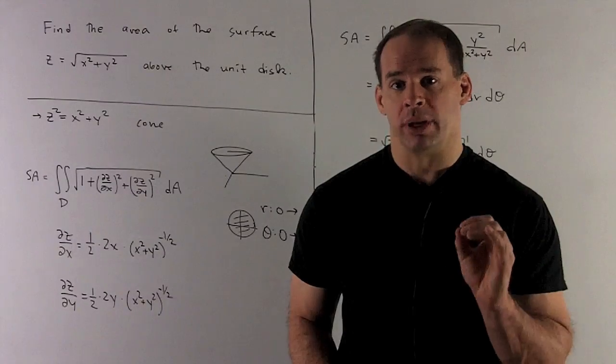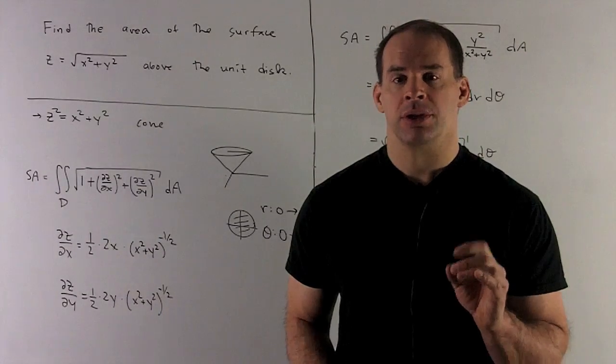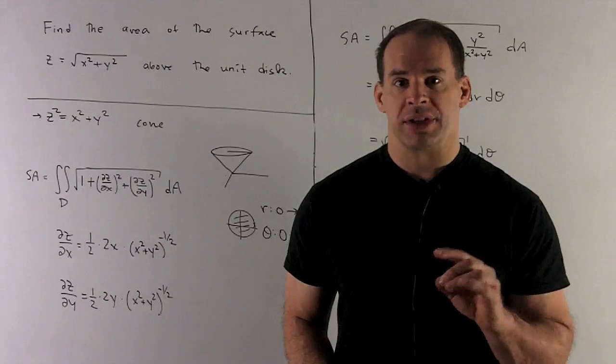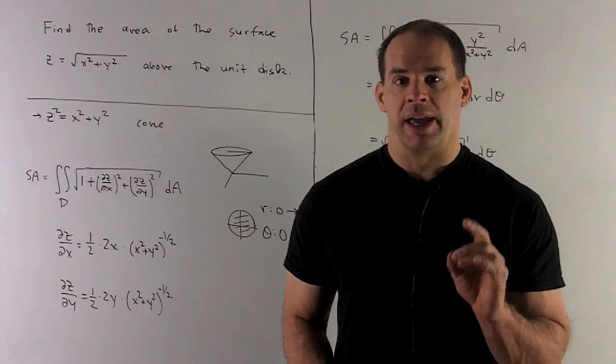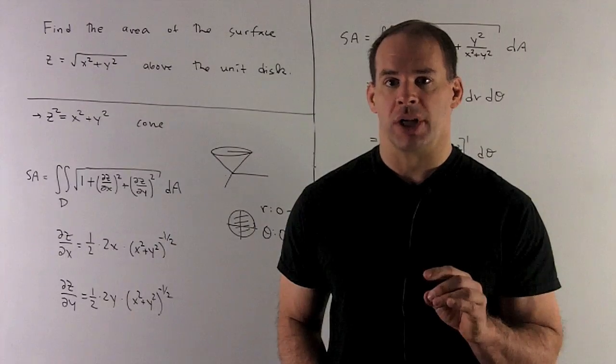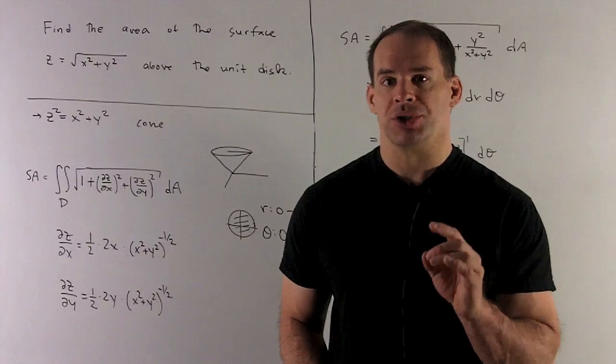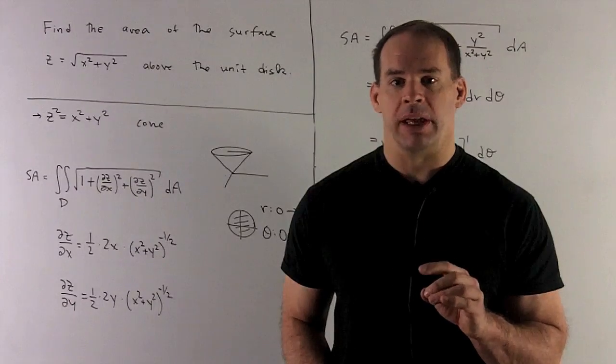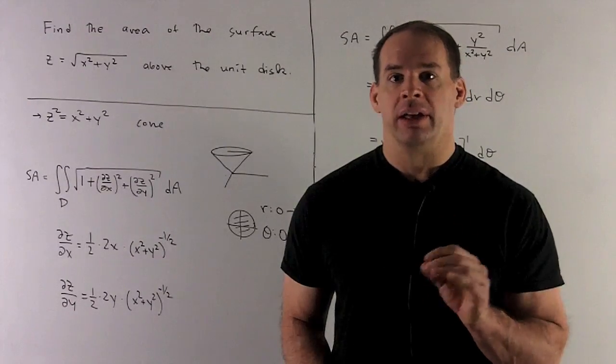Next, formula for integration. We're going to take the integral over the unit disk in the plane against square root 1 plus partial z partial x squared plus partial z partial y squared. That's against dA, the element of area in the plane.